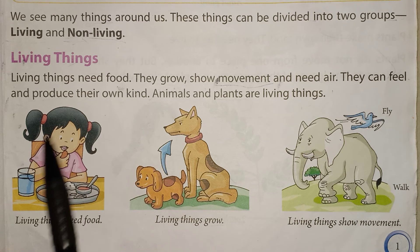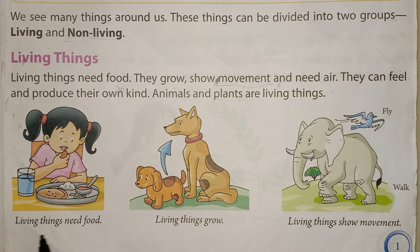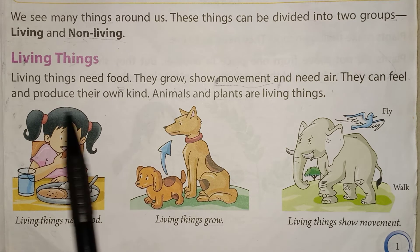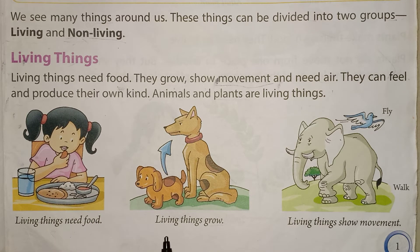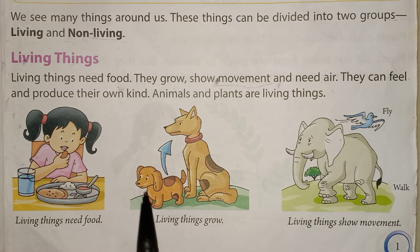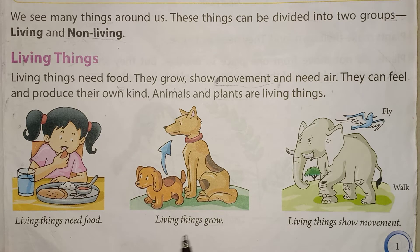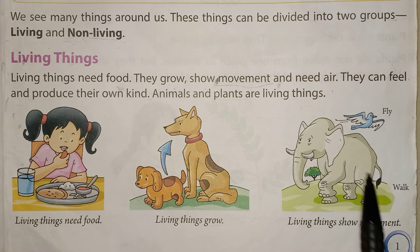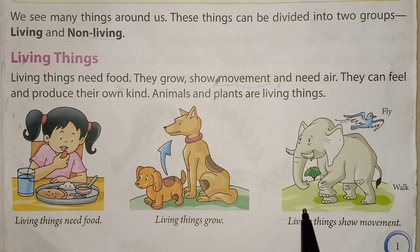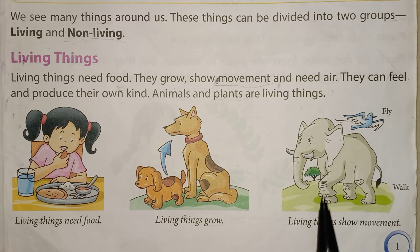The first picture shows that living things need food — she is eating food. Living things grow: when it was a small puppy and now it is a dog. Living things show movement: this elephant is walking, the bird is flying — they move on their own, no one has to push them.